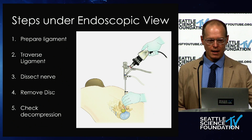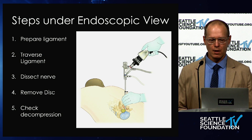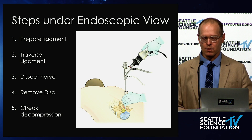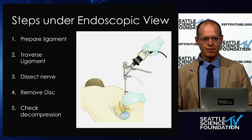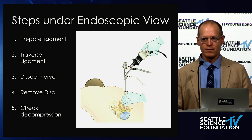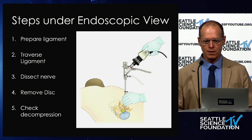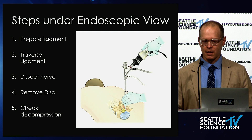So six steps. Once you get here, it's pretty short work. First, prepare the ligament — clean off the ligament so that you can see it better and so that muscle tissue and vessels are not going to bleed and cause visualization problems. Second, traverse the ligament. Third, dissect the nerve. Fourth, remove the disc. Fifth, check the decompression.